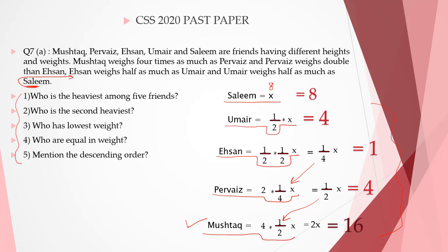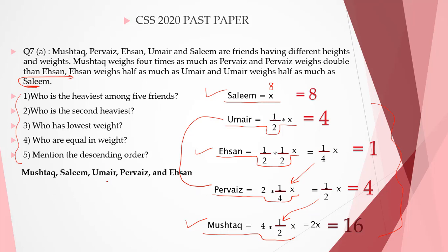Now we can easily answer the questions. Mushtaq is heaviest among the five friends. Salim is the second heaviest. Ehsan has the lowest weight. Umair and Parvez are equal in weight. And we can also write them in descending order.